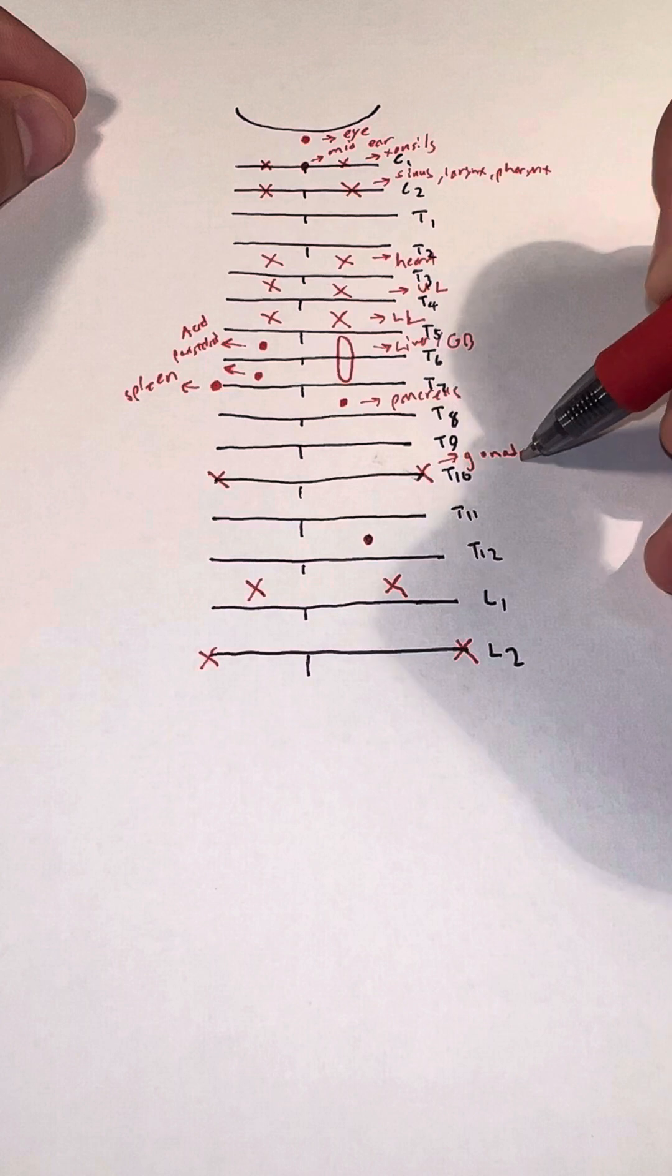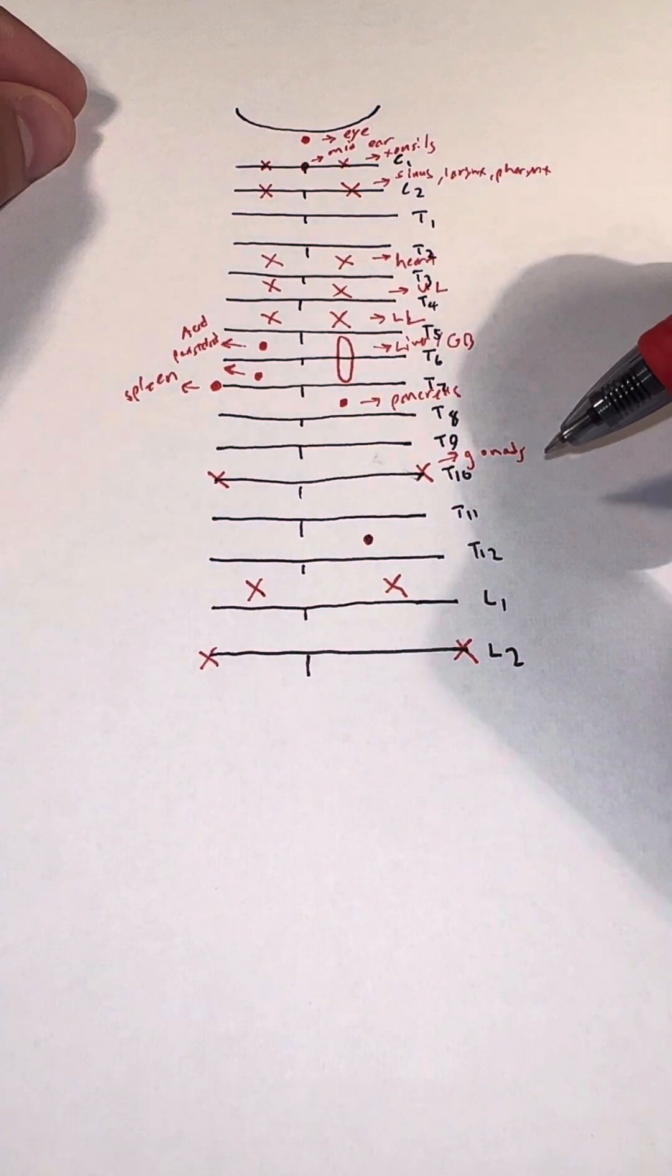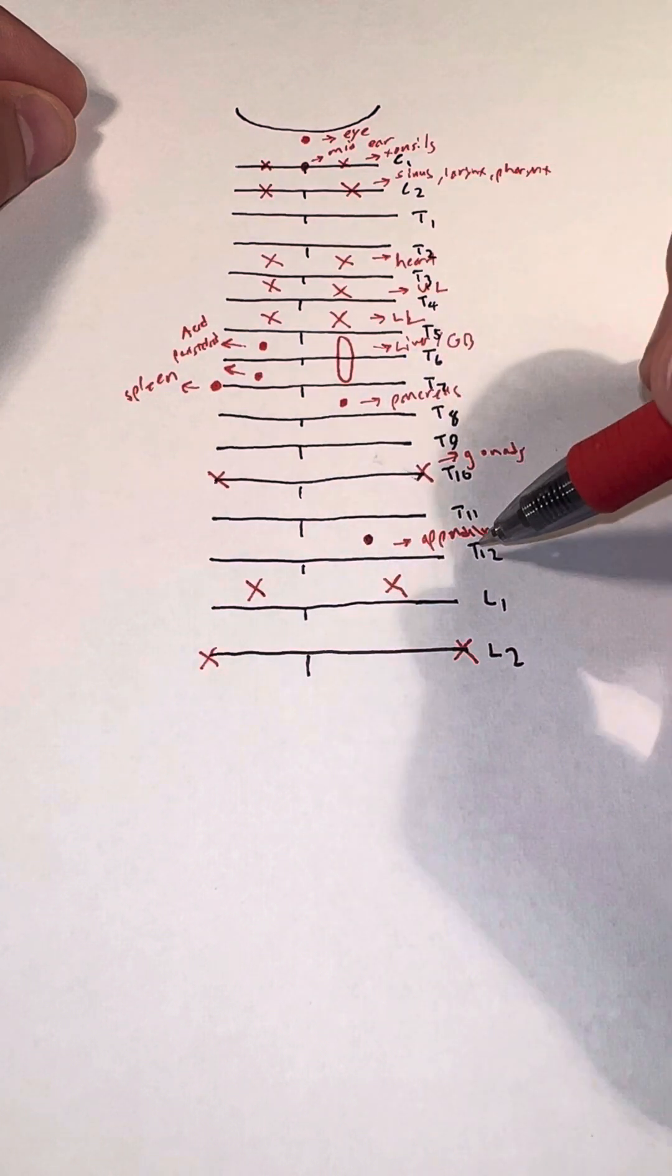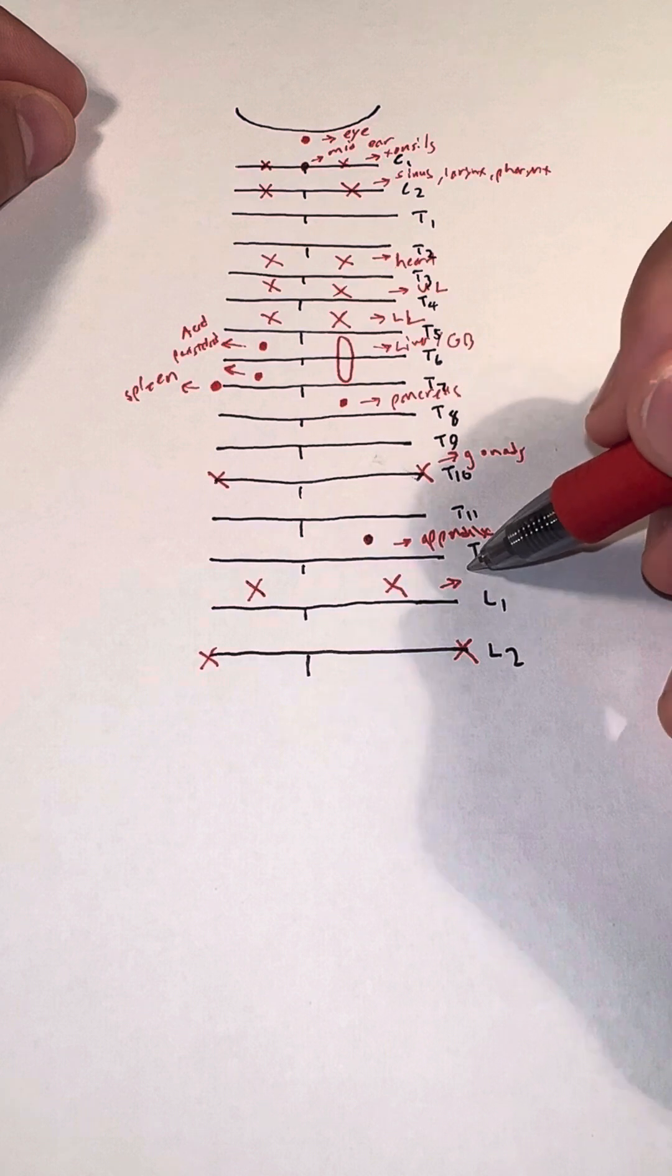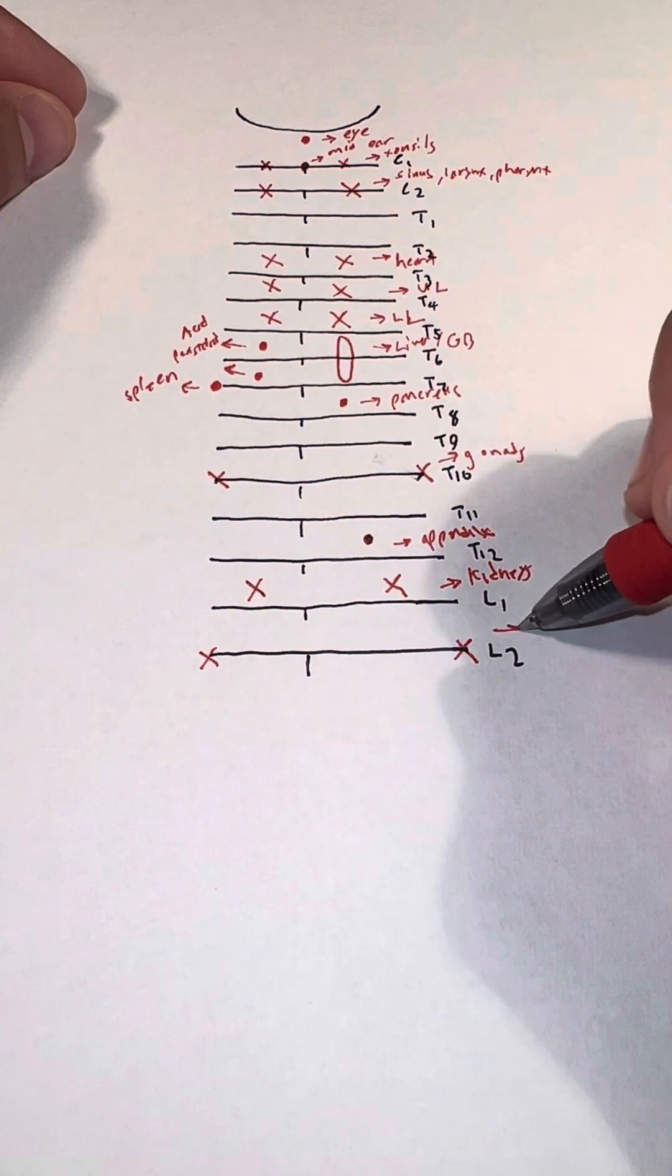T10, this is the gonads on both sides. T11-T12, this is the appendix. Between T12 and L1, this is your kidneys. The last one here is the bladder.